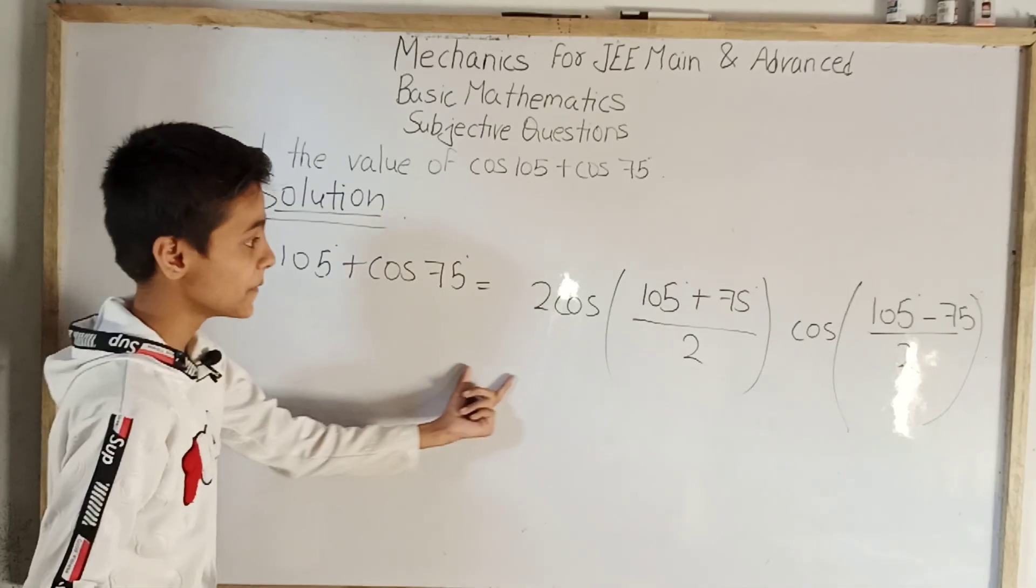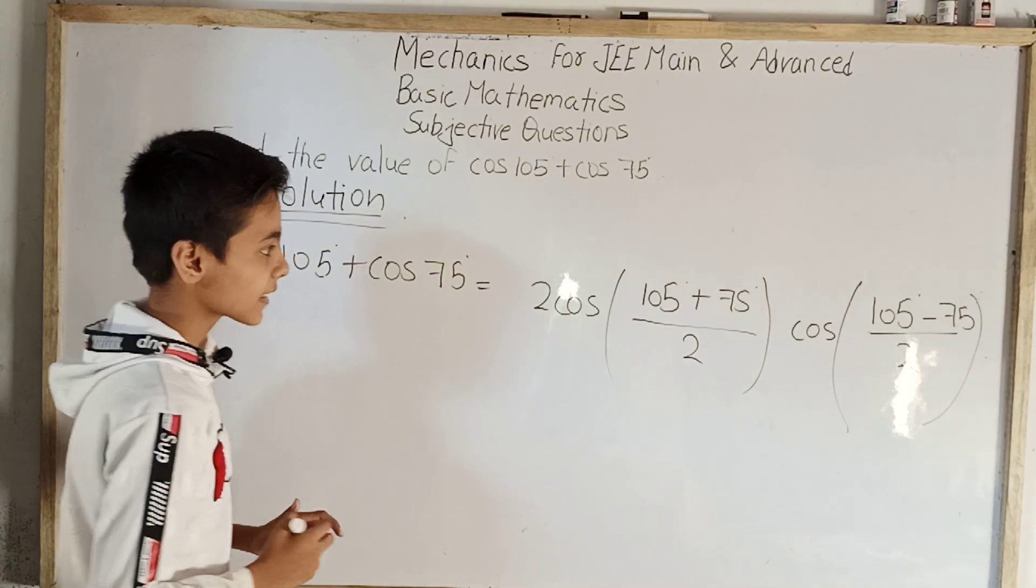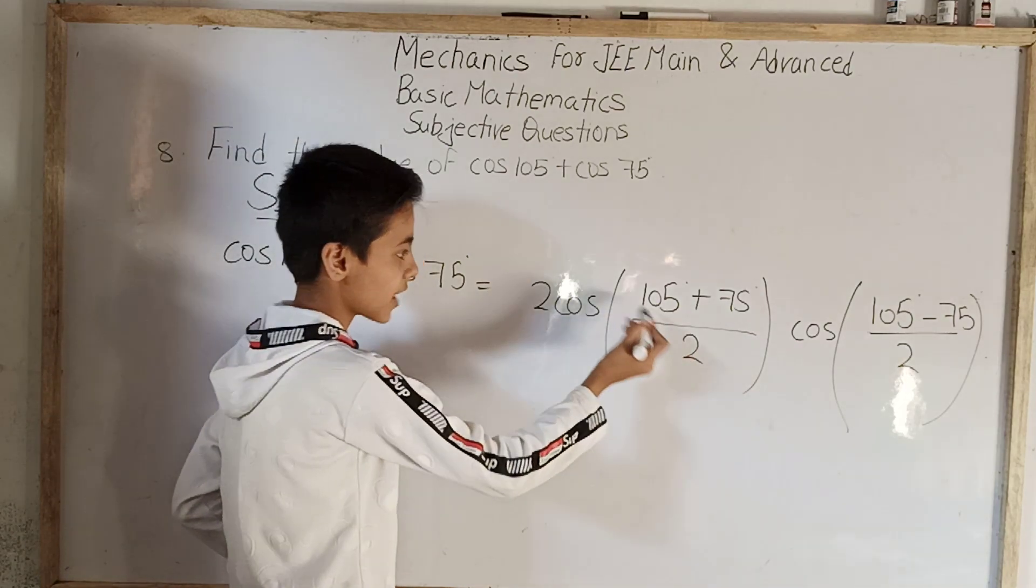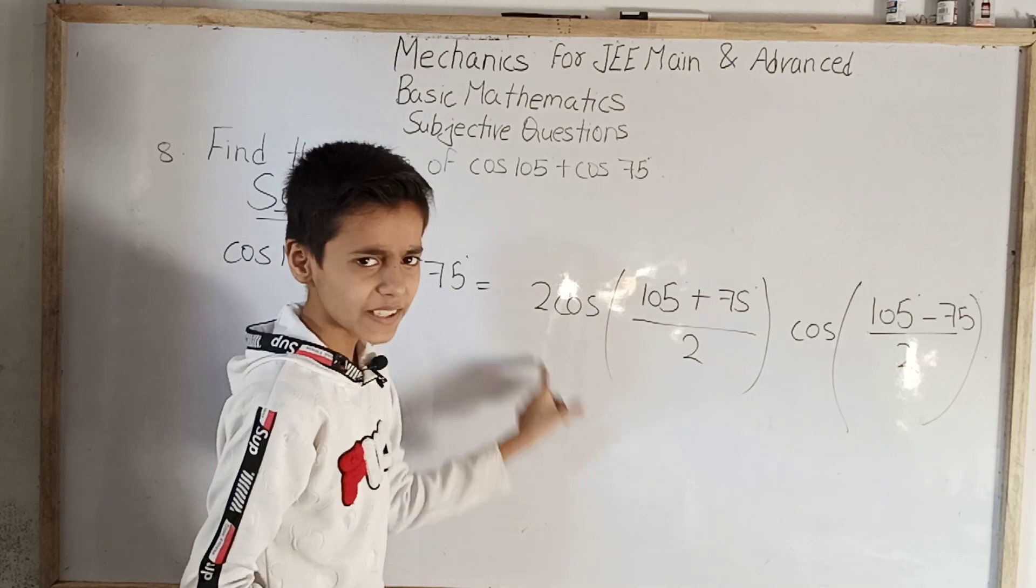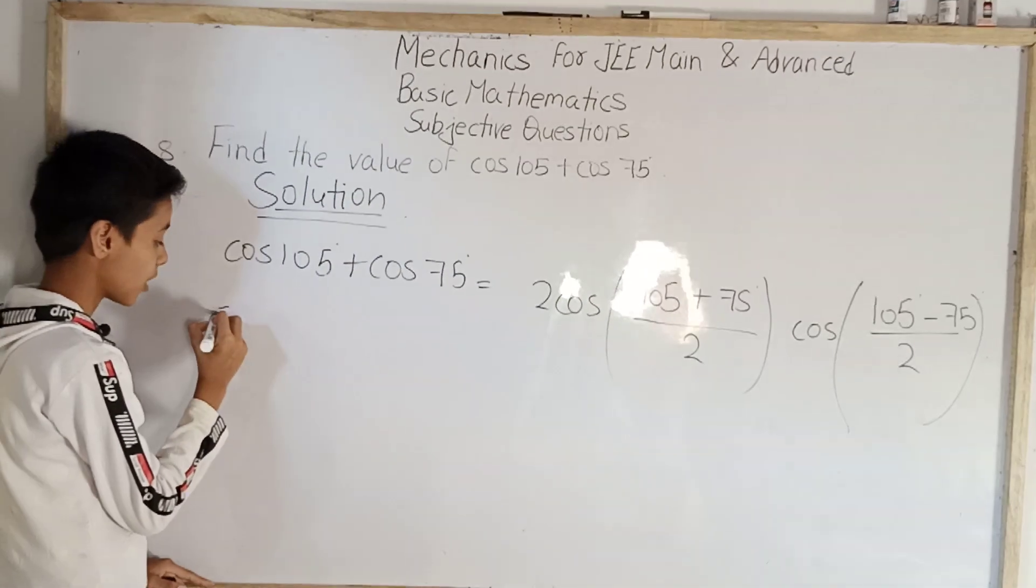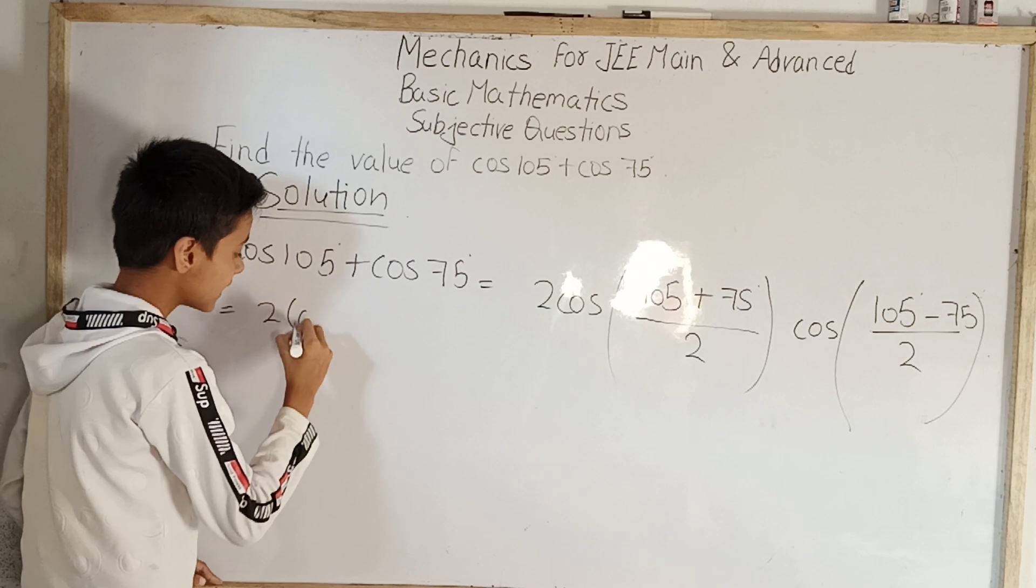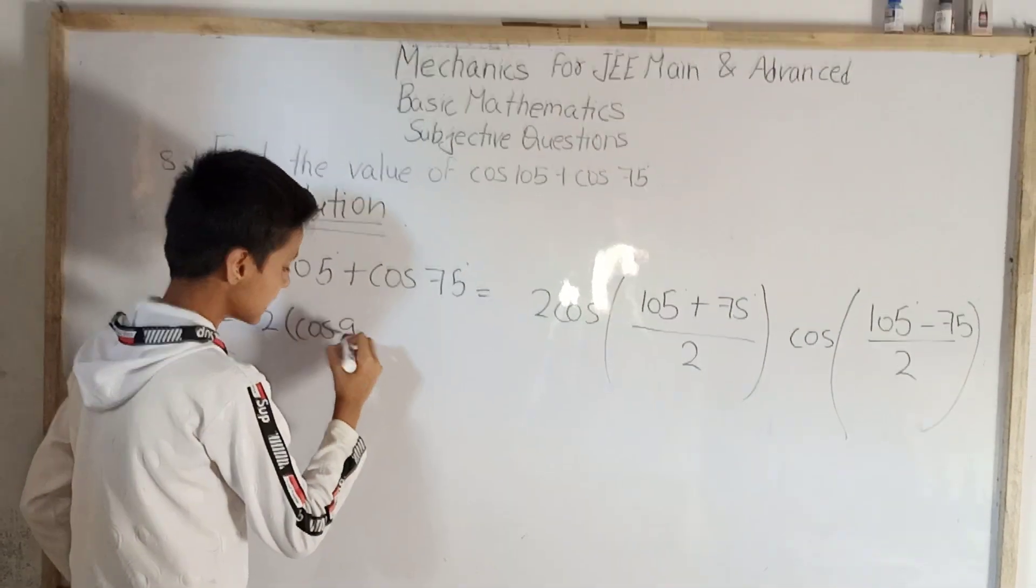Now when we solve those brackets, first we'll add them, reduce to half, take its cos and multiply by 2. When we solve this whole thing, finally we will get 2 cos bracket cos 90 degree.